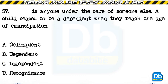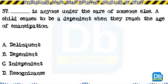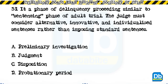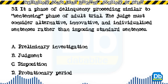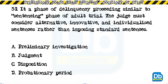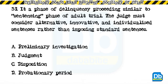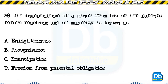Question 37: Anyone under the care of someone else; the child ceases to be a dependent when they reach the age of emancipation: a) delinquent, b) dependent, c) independent, d) recognizance. The answer is B, dependent. Question 38: In a phase of delinquency proceeding similar to the sentencing phase of an adult trial, the judge must consider alternative, innovative, and individualized sentences rather than imposing standard sentences: a) preliminary investigation, b) judgment, c) disposition, d) probationary period. The answer is C, disposition.